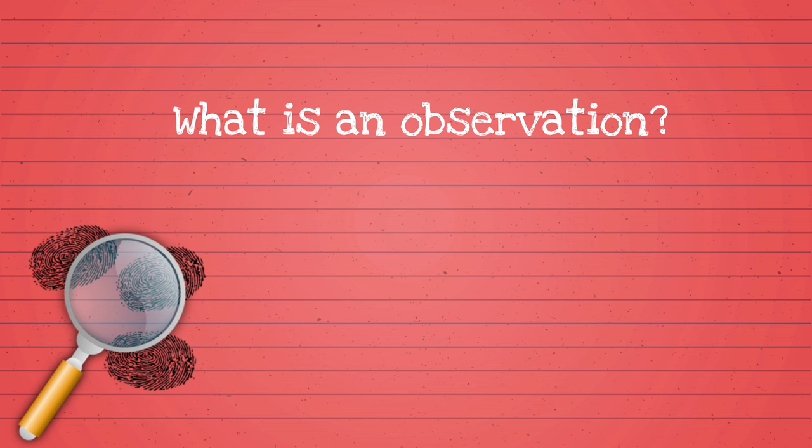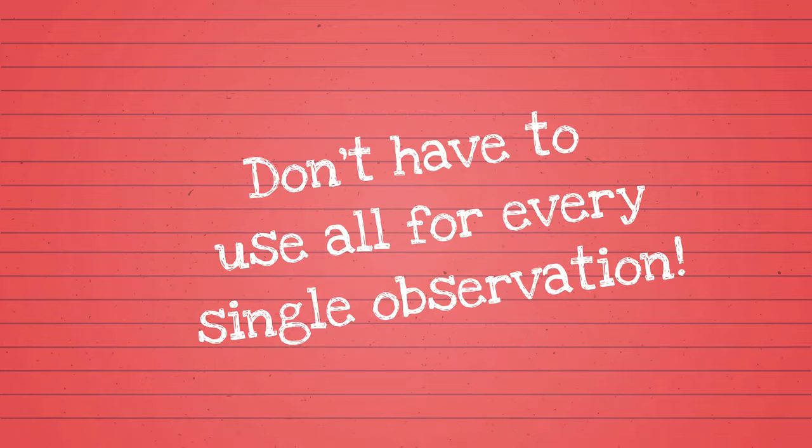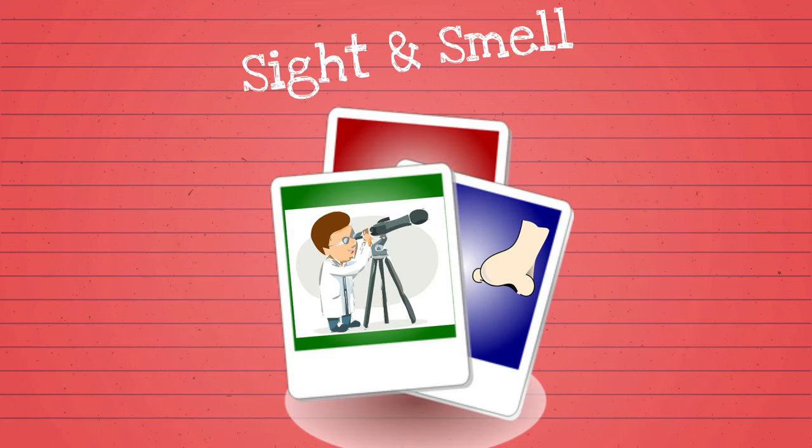When we make an observation, we're using any number of our five senses to gather information. Now, you don't have to use all of them, but you at least have to use a combination of those senses.